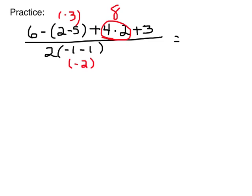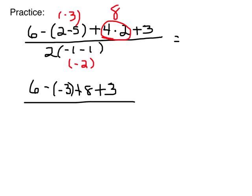Alright, and then let's go ahead and solve. Bring down 6 minus negative 3 plus 8 plus 3 over 2 times negative 2 is negative 4. Alright, I've done all my multiplication and division left to right. 6 minus negative 3 is the same as saying 6 plus 3, which is 9, plus 8 is 17, plus 3 is 20.